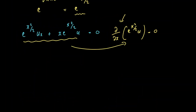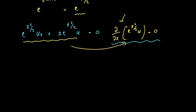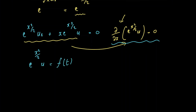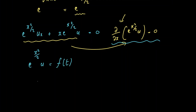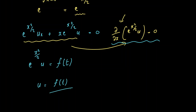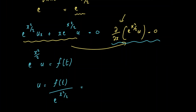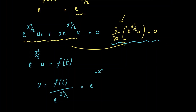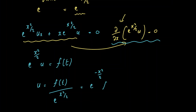Now we're going to integrate our expression with respect to x. On the left-hand side, we're left with e raised to x squared divided by 2 times u, and this is equal to f of t. All we need to do is divide by e raised to x squared divided by 2, and we get u is equal to f of t divided by e raised to x squared divided by 2, which can be rewritten as e raised to minus x squared divided by 2 times f of t.